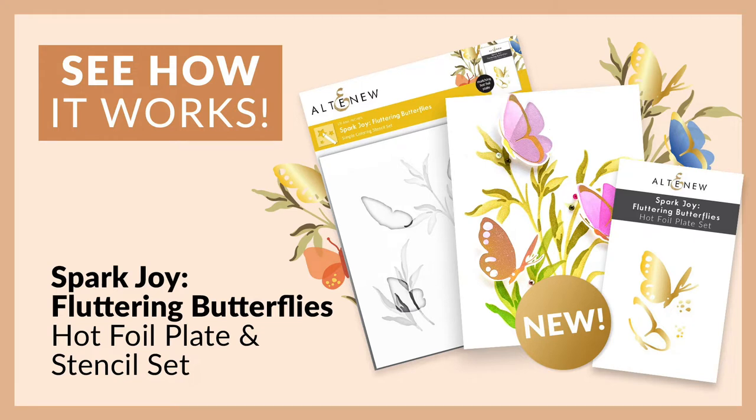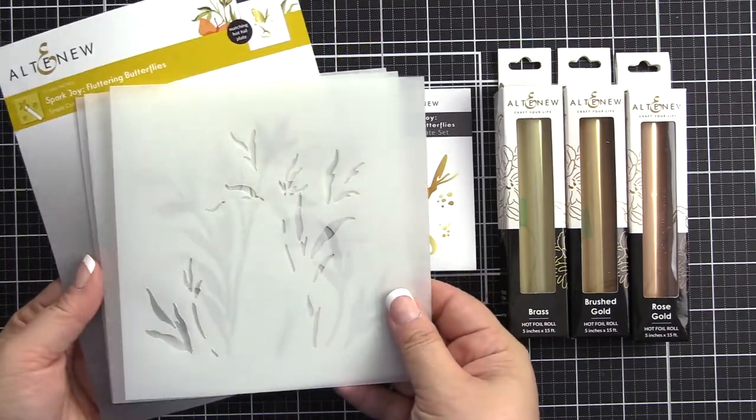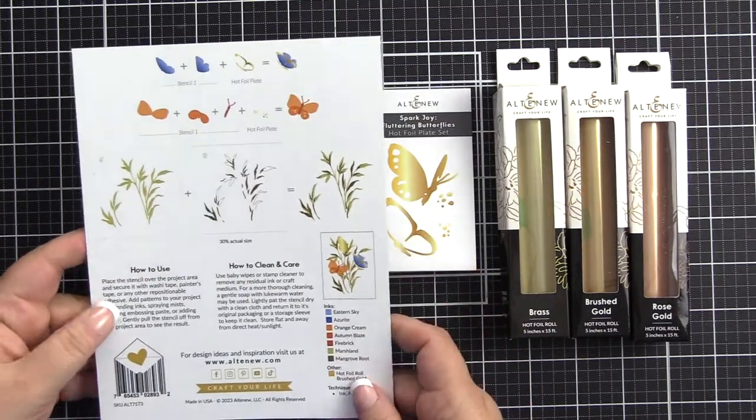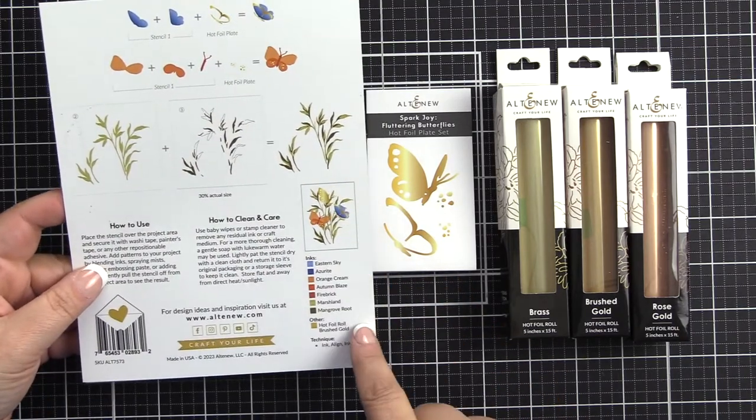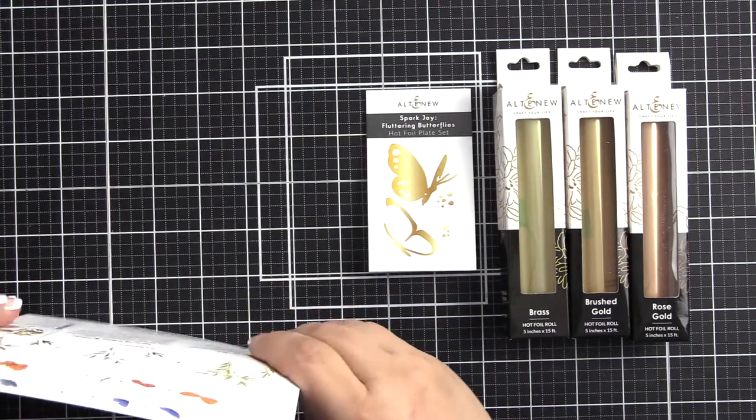In this kit, you will get a three-piece simple coloring stencil. On the back is a layering guide for each of the images included, as well as an example project you could create with the ink colors and foil listed.